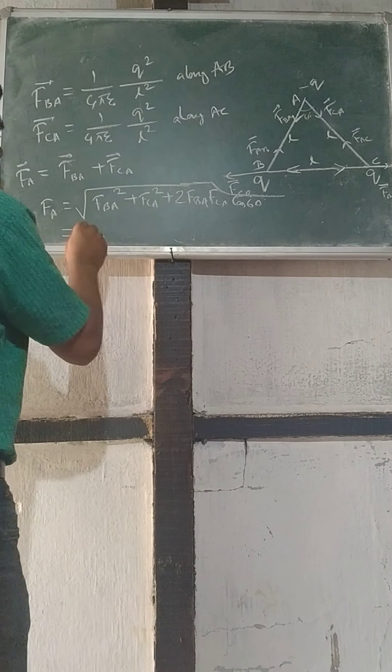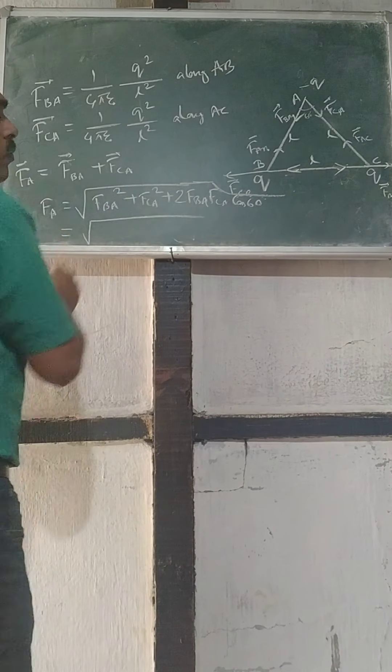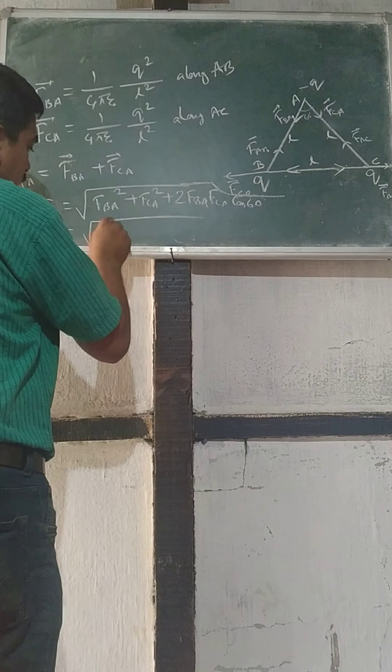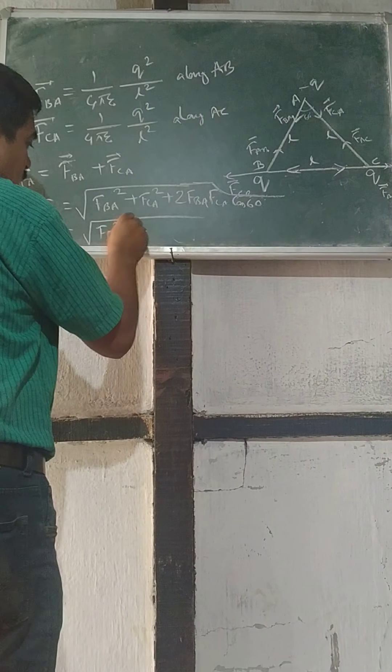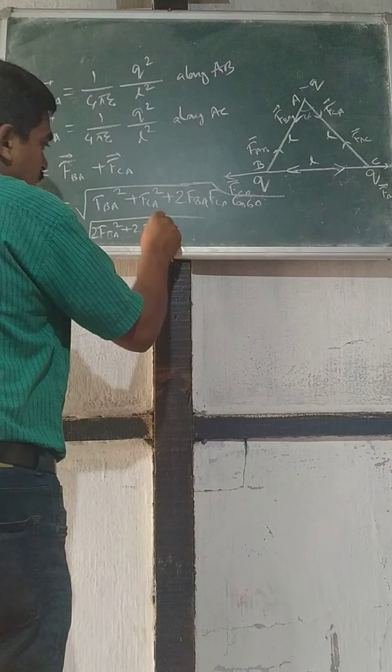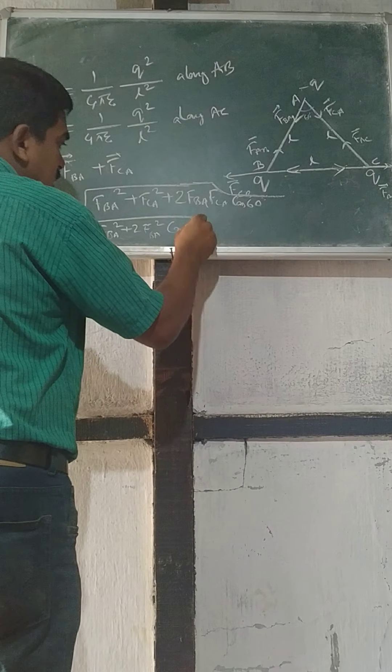Okay, these two values are same. So we can write FBA square plus FBA square plus 2 FBA square cos 60.